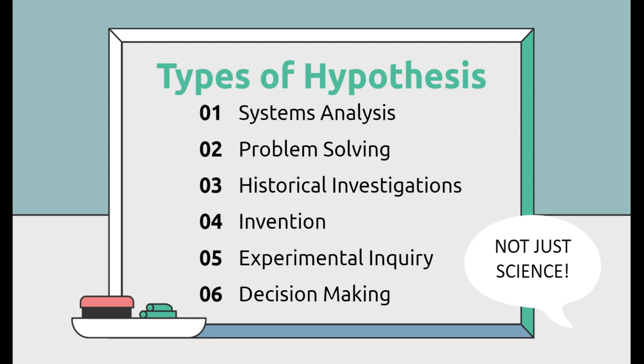Well, to help with that, I want to point out that there are many types of hypotheses. One type is a system analysis. This is looking at an overall system and how each part might be manipulated to change that system. They might also be problem solving, trying to figure out what solutions there are to solve a specific problem. There's also historical investigations. This is for you history teachers trying to figure out what happened and what were the possible reasons why. Maybe they're inventing. Maybe they're coming up with some form of invention, like in a music classroom or whatnot. Maybe there's some experimental inquiry. These are the classic science investigations. Or there's possibly decision making. Not all of these are science. It's not just science.